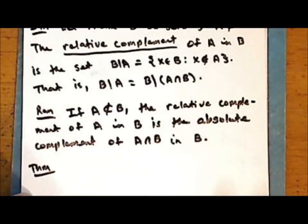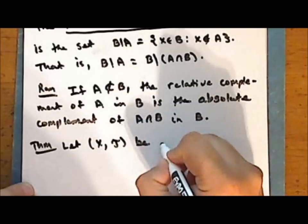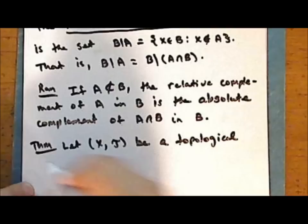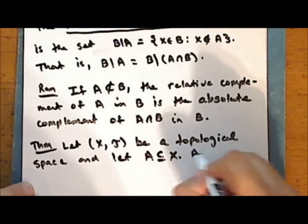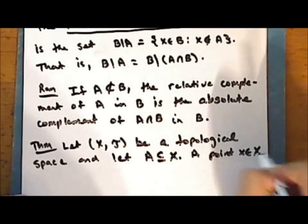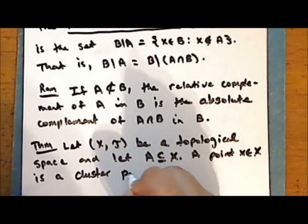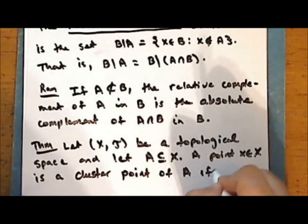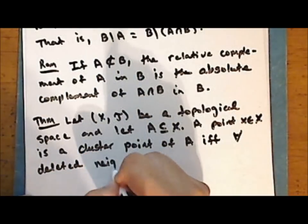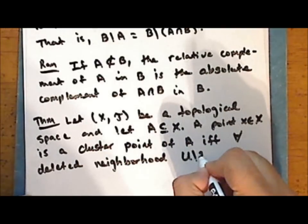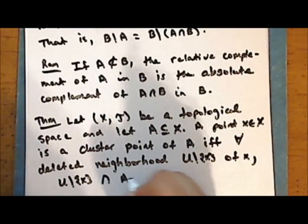Next we will prove, as a theorem, one of the exercises set in the last lecture. Let the set X together with some topology tau be a topological space, and let A be a subset of the space X. A point x in the space X is a cluster point of the set A if and only if, for every deleted neighborhood — U set minus the singleton containing x of the point x — we have that the intersection of that deleted neighborhood of x with the set A is not empty.